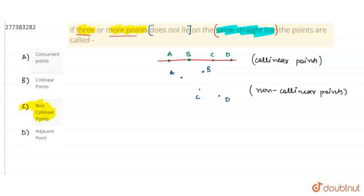So, the first option is concurrent points. Concurrent points means they are all meeting points A, B, C. But we have nothing given here in this question about that.